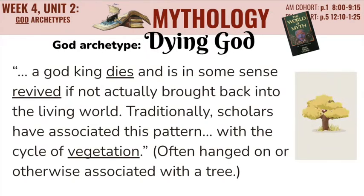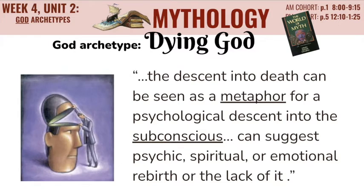Next, the Dying God archetype. This is frequently the figure who died in the story of the Great Mother. The god king dies and is in some sense revived, if not actually brought back to the living world. Scholars have traditionally associated this pattern with the cycle of vegetation, so you'll often see dying god figures hanged on or otherwise associated with a tree or other forms of vegetation. The dying god's descent into death can be seen as a metaphor for the psychological descent into the subconscious — it can suggest psychic, spiritual, or emotional rebirth, or the lack of it. It's like allowing the part of you that was a middle schooler to go so the high schooler can flourish, or the high schooler to go so the adult can flourish. It's not a literal death, but the death of some part of you so you can be spiritually or emotionally renewed.